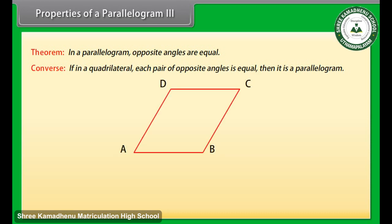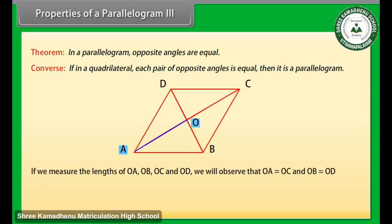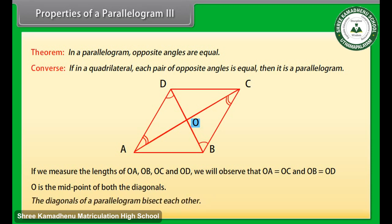Draw a parallelogram ABCD and draw both its diagonals intersecting at point O. If we measure the lengths of OA, OB, OC, and OD, we will observe that OA is equal to OC and OB is equal to OD. Or we can say that O is the midpoint of both diagonals. If we repeat this activity with more parallelograms, we will find that O is always the midpoint of both diagonals. This gives us a new theorem: the diagonals of a parallelogram bisect each other.